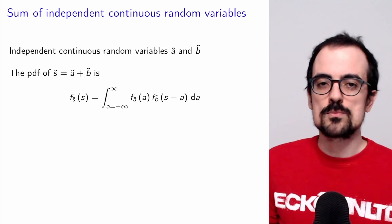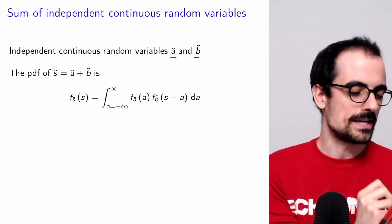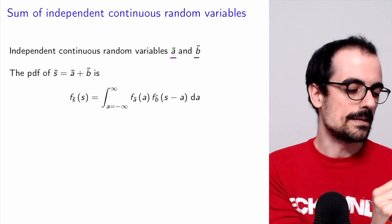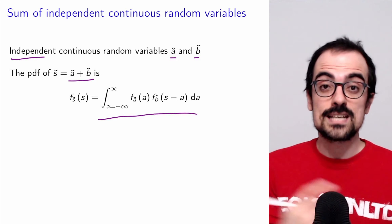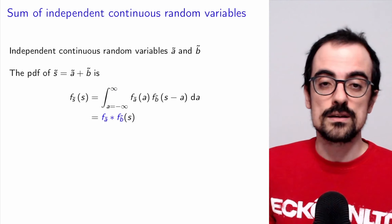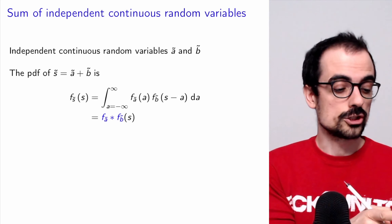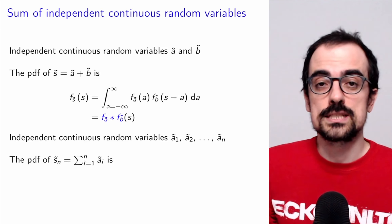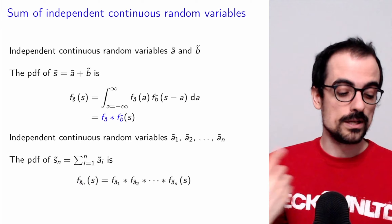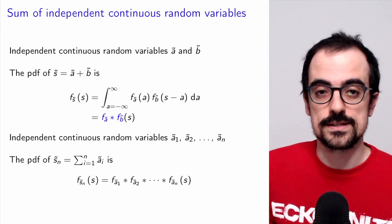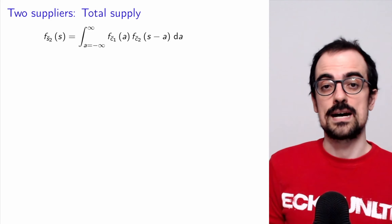In general, for two independent continuous random variables A and B, the PDF of their sum equals the continuous convolution of the first PDF and the second PDF — where the second PDF has its argument shifted to S minus A. This is how we define the convolution operator for continuous functions. By the same logic applied in the discrete case, for N independent continuous random variables, the PDF of their sum is just the convolution of all the individual PDFs.